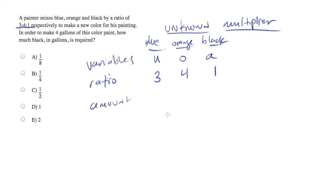So we can figure that the amount of each one of these in our mixture is three parts of blue times some unknown multiplier, four parts orange times some unknown multiplier, and one part black times some unknown multiplier.